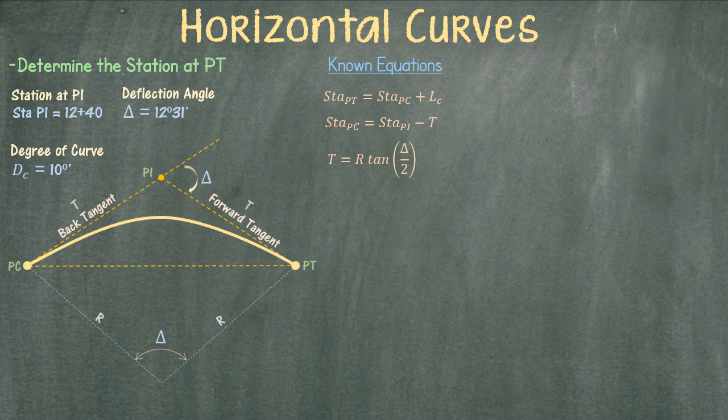The tangent is equal to the radius times the tangent of the deflection angle divided by two. We are given the deflection angle between the tangents but we still need to calculate the radius.